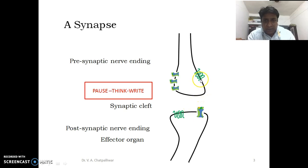The receptor which is located presynaptically and which allows the neurotransmitter to interact with it, they are called as autoreceptors.